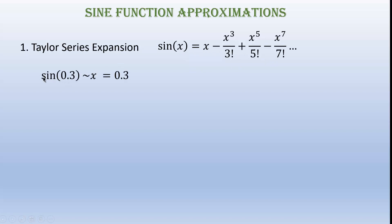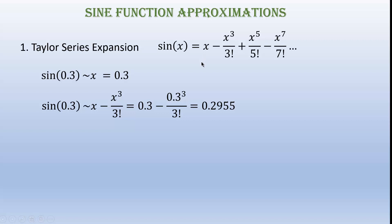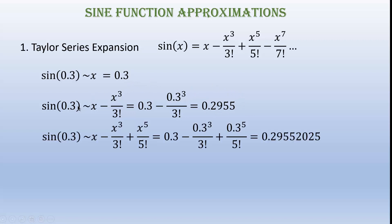Whenever x equals 0.3, we plug in the value of x and get 0.3. If we want a more precise value, we can use two terms to get a value which is a bit more accurate. Again, if we want an even more precise result, we can take more terms and find a result which is more accurate than the previous. The actual value of sine 0.3 is almost the same as the value we got from Taylor series expansion.